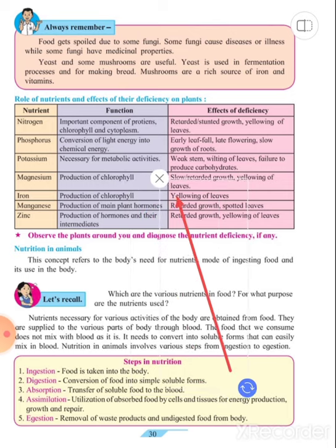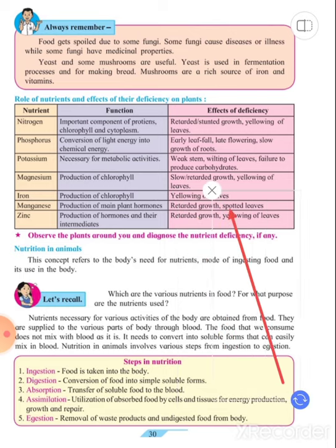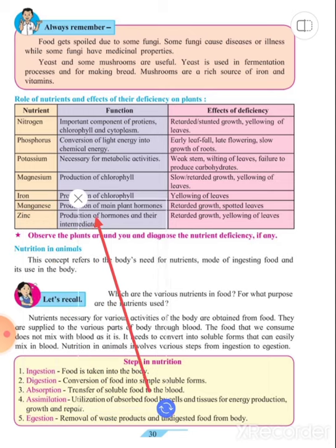The next component is manganese. It is necessary for production of main plant hormones. If there is a deficiency, we observe retarded growth and spotted leaves.